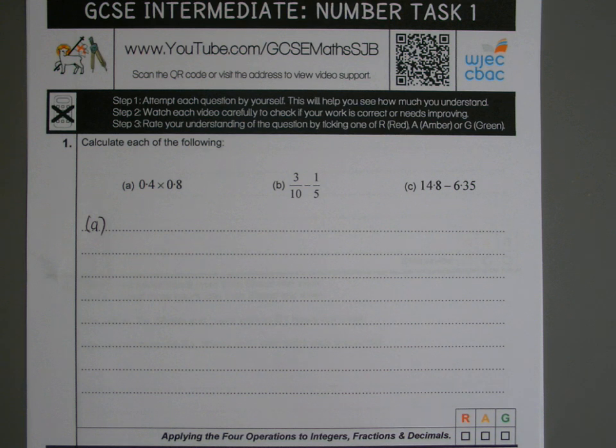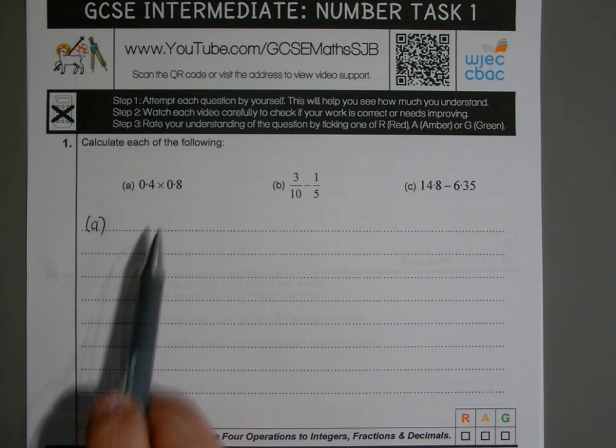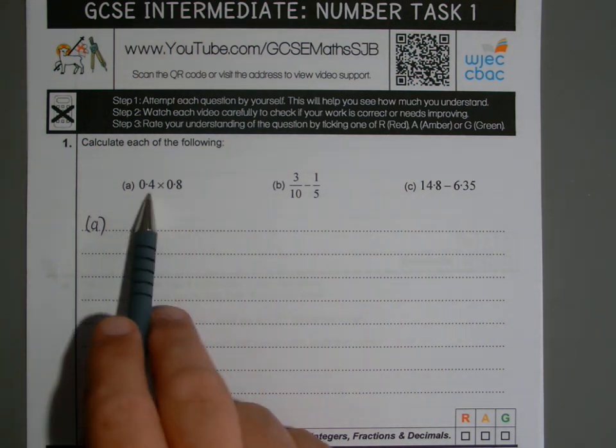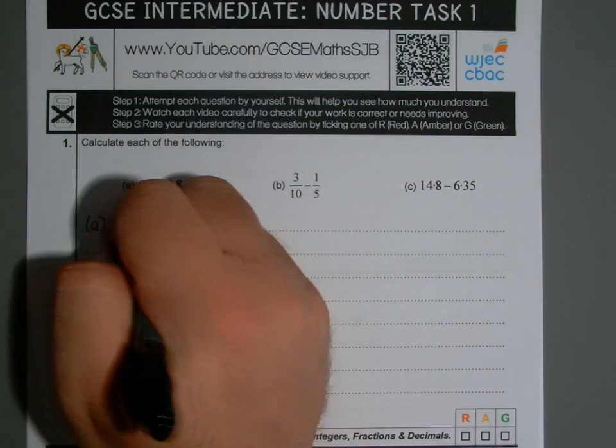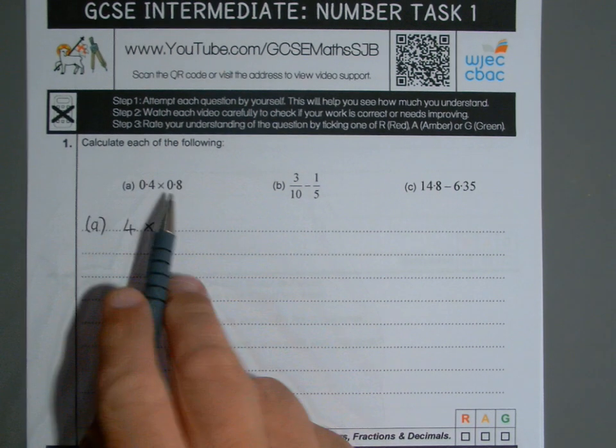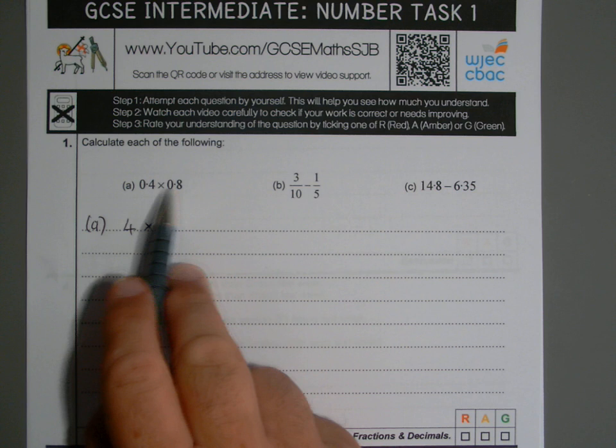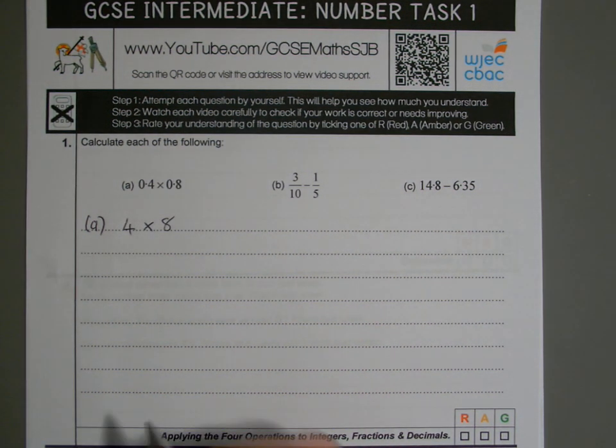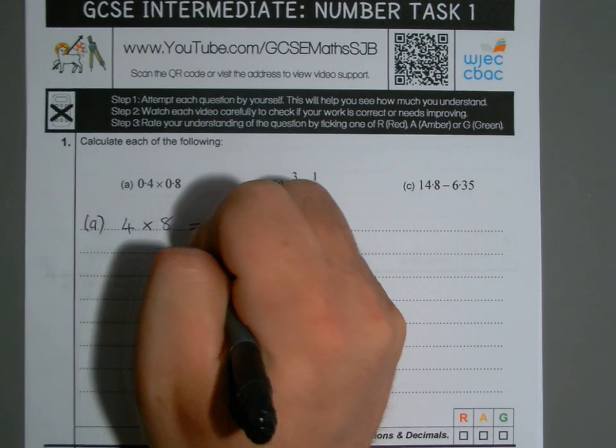Right, part A is actually really easy. When you want to multiply decimals, the first thing I would do is just pretend the decimal points aren't there. So the first number would read as 4 if the decimal point wasn't there, and you multiply it by the second number, which would just be 8. So 4 times 8, you can do that easily, because 4 times 8 is 32.